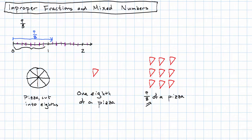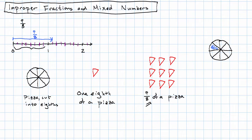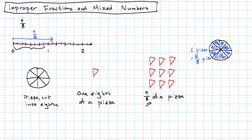The thing we noticed about that length of 9 eighths is that it's longer than a unit length. If we take these 9 eighths and put them back together and see how much of a pizza we've got — here's my pizza — I want 1, 2, 3, 4, 5, 6, 7, 8 eighths. That's one pizza, the same as 8 eighths of a pizza. If I want to have 9 eighths of a pizza, I need that 8 eighths plus another eighth.